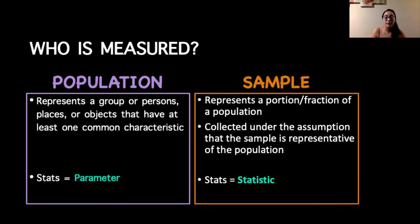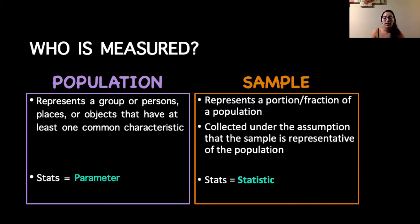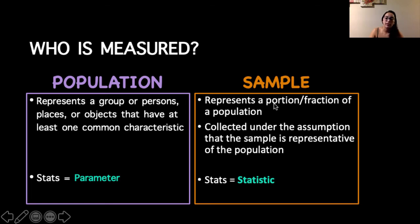A sample represents a portion or fraction of the population. For example, if we were interested in the entire CSULB campus and wanted to see how many people visited the library on Tuesdays — at the beginning, middle, and end of the semester — we'd take a sample of whoever shows up. That assumes the entire campus population is not visiting the library every single Tuesday. Whoever enters randomly on that particular day becomes the fraction of the population we're interested in.